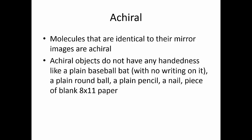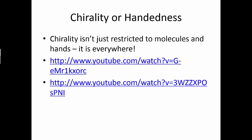Molecules that are identical to their mirror images are called achiral. An achiral object has no handedness to it — you can superimpose it all day long and it will work. Like a plain baseball bat with no writing on it, a plain round ball, a plain pencil, a nail, or a piece of blank paper. There's nothing there where superimposition fails. That's called achiral — not chiral.